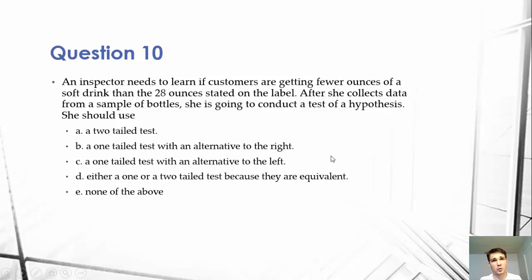So this question is really asking us about our understanding of one-tailed or two-tailed tests. If we have a question as a researcher, if we want to know if something is less than what we believe our null hypothesis should be, so that would be our 28 ounces.